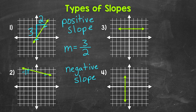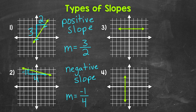Now for the run, we go over one unit, two units, three units, four units to get to the other point. So our run is four, and that's a positive four since we went to the right. So our slope equals our rise of negative one over our run of four — our slope is negative one fourth. That's our second type of slope: negative slope.